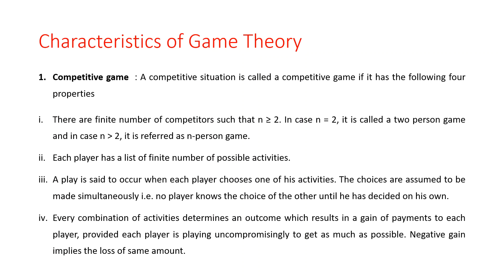The first characteristic is a competitive game. A competitive situation is called a competitive game if it has the following four properties. The first property is there are a finite number of competitors, such that n is greater than or equal to 2.